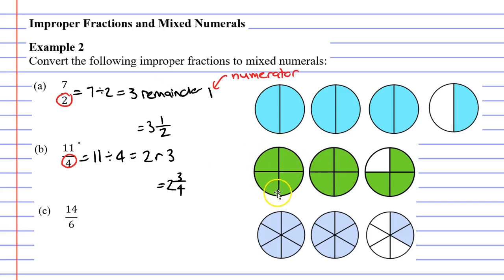If we look at the diagram at right, you will notice that we have 2 completely colored in circles, representing our whole number of 2, and finally a fraction of 3 quarters at the end, which is what we had here.